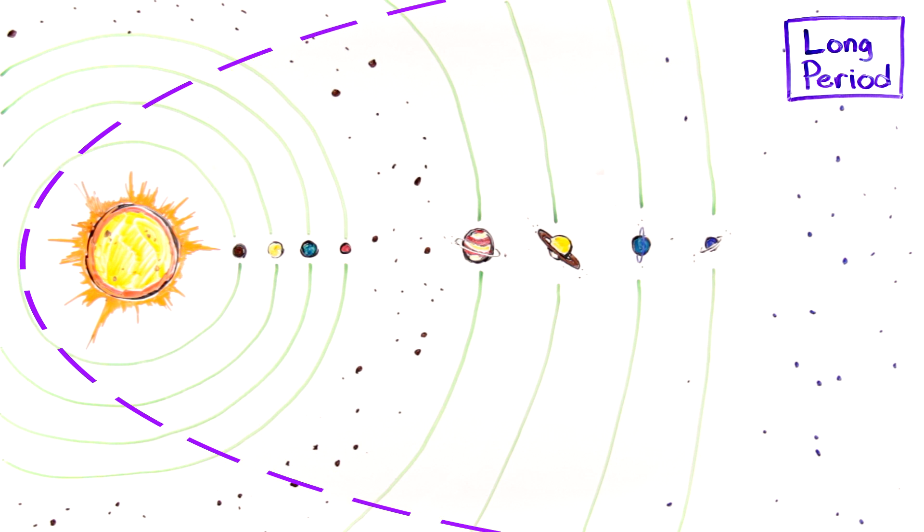Long period comets have orbital periods of more than 200 years. The spectacular comet Hale-Bopp, discovered in 1995, won't return to the inner solar system again for about 2500 years, and comet Kohoutek, visible in the 1970s, won't be back for about 75,000 years.